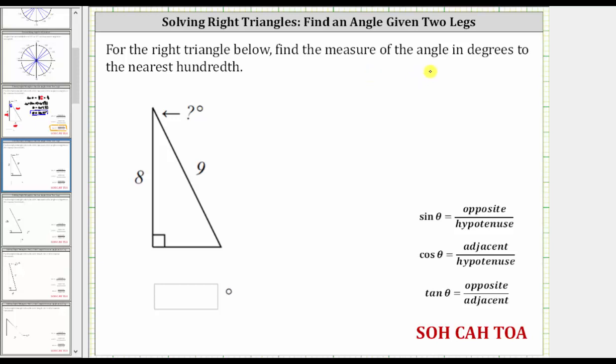For the right triangle below, find the measure of the angle in degrees to the nearest hundredth. So our goal is to find the measure of this angle here, let's label this angle theta.